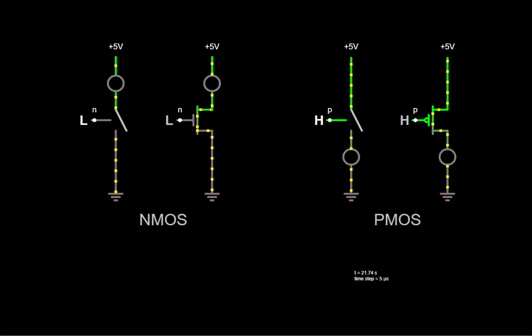In this video, we'll look at the structure and operation of CMOS transistors. Recall that there are two kinds: NMOS transistors that act like switches that are open when their gate is low and closed when the gate is high, and their complement, PMOS transistors, that act like switches that are open when the gate is high and closed when the gate is low.